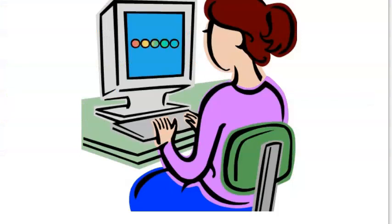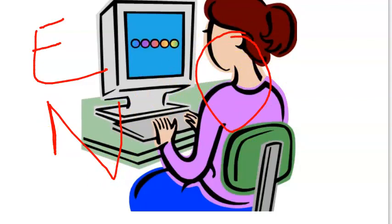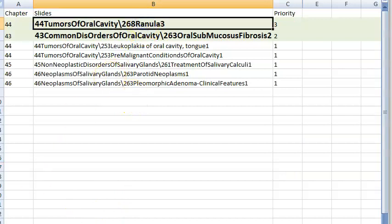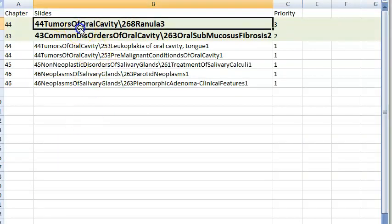Ear and nose done. Moving on to oral cavity. In oral cavity, ranula is very important — it comes under tumours of oral cavity.